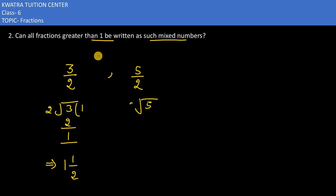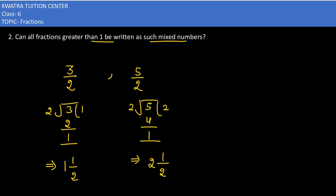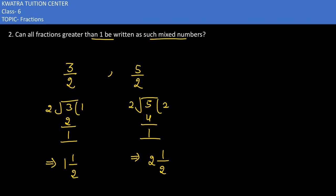Second situation is 5 and 2. 2 would come here, this is 4, and 1 would be the remainder. Now you have the results here. This would give you 2, and the remainder is 1. 2 and 1 by 2 would come. Now we can understand these 2 numbers.